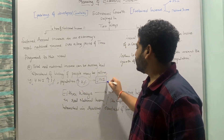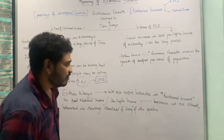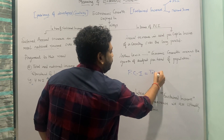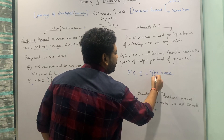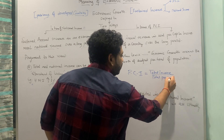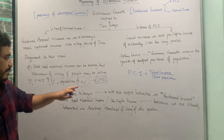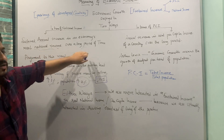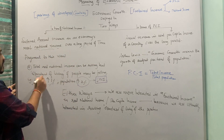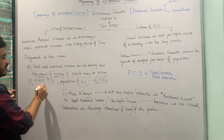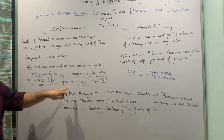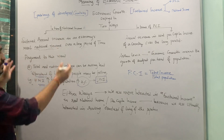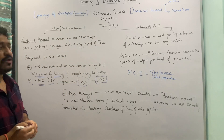As a result, per capita income is falling. Per capita income is given by the total income of a country divided by its total population. So what is happening is, if there is any sustained annual increase in an economy's national income over a long period of time, the standard of living is not being measured properly, because as population increases, per capita income goes down.